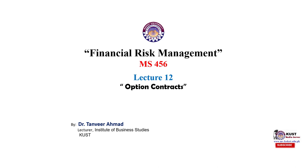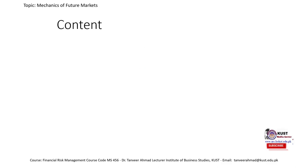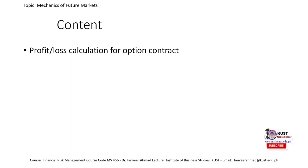Welcome to the lecture of Financial Risk Management. This is lecture 12 related to option contracts. We are going to discuss how to calculate the profit and loss for option contracts. In previous videos we explored the concept of derivatives and forward, future, and option contracts. There are four different kinds of option contracts: long call, long put, short call, and short put. We will also understand the three different types of traders in derivative markets.